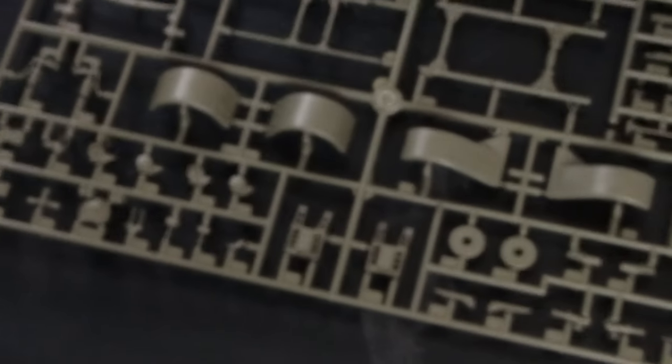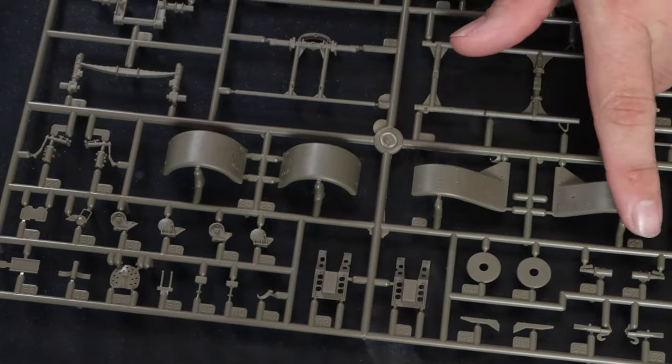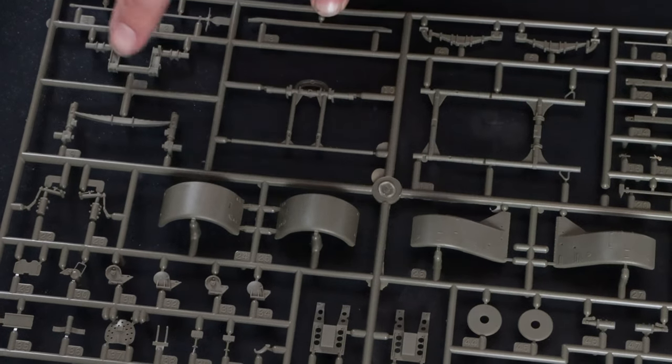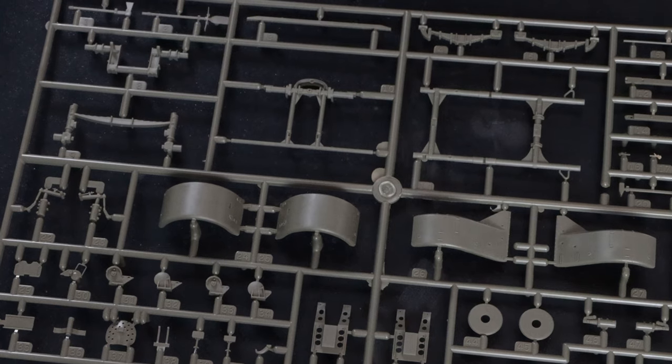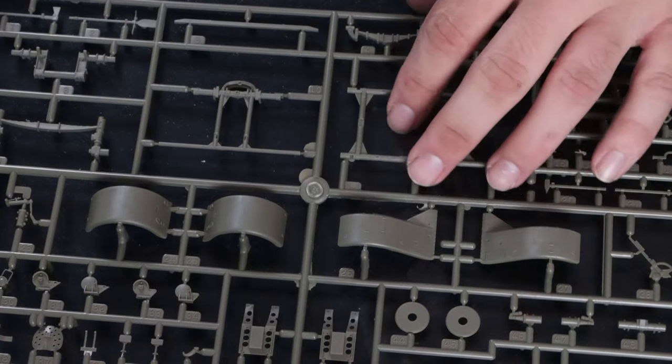Then the last larger sprue has a lot of what looks like the trailer pieces. So there's the fender wells, like leaf spring there, the torsion arms, there's a few more tools, all the various parts that would make up the trailer.